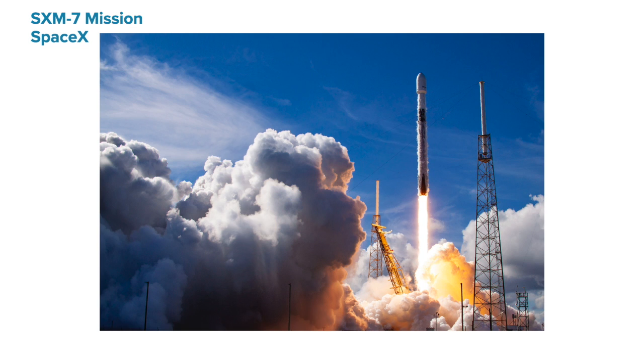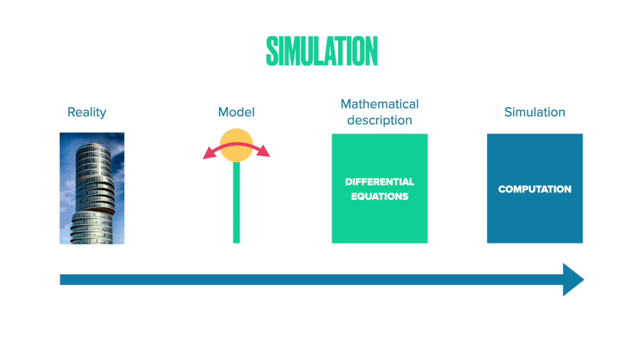In order to simulate the dynamical behavior of real engineering structures or systems, first we model the structure. Modeling is just another name for simplifying the description of the real structure by focusing only on the relevant features.